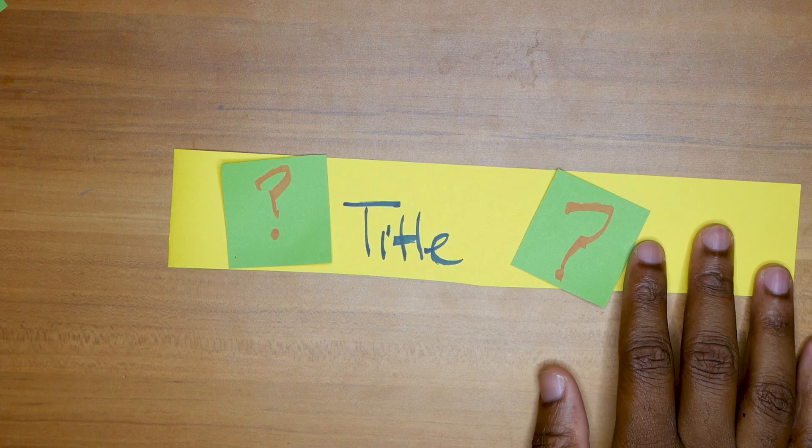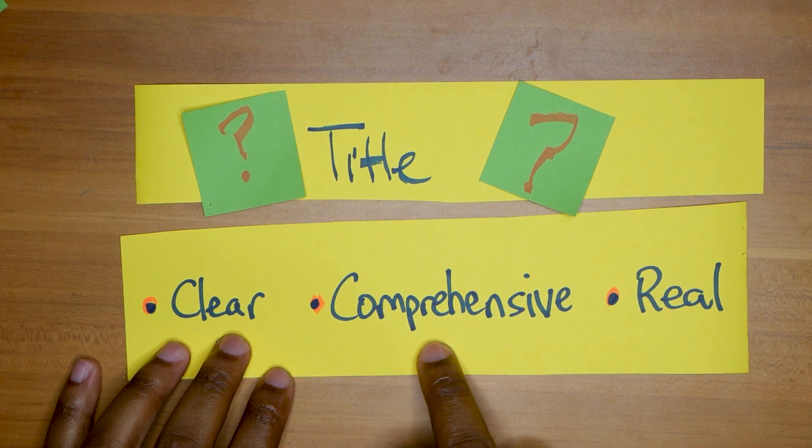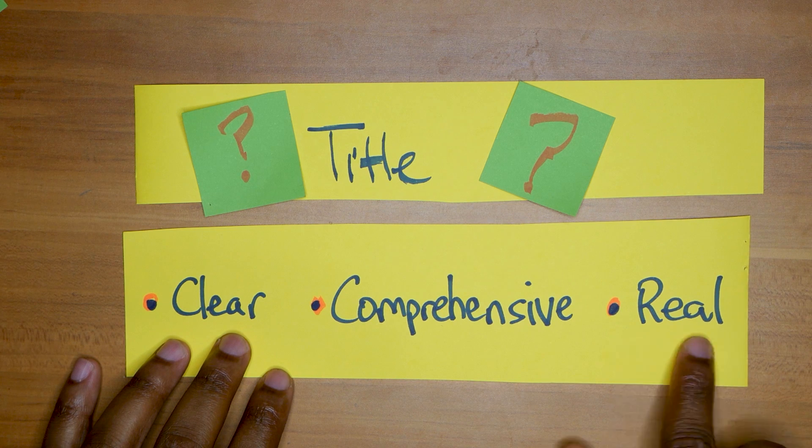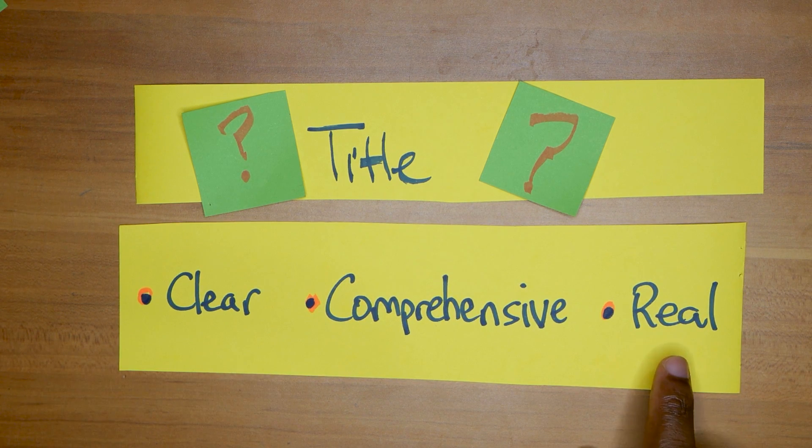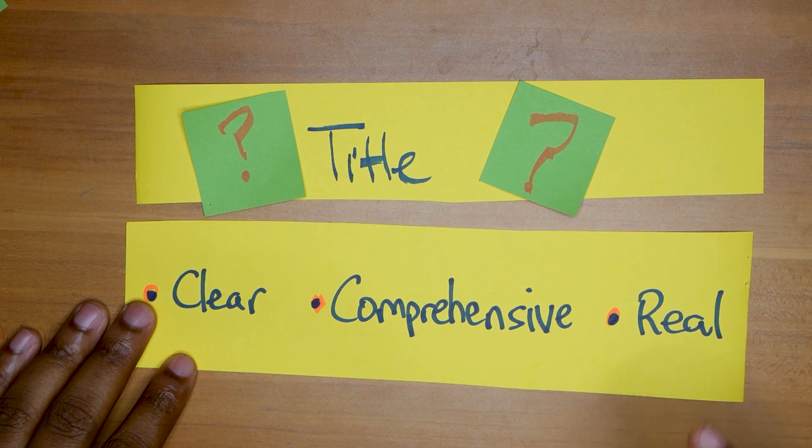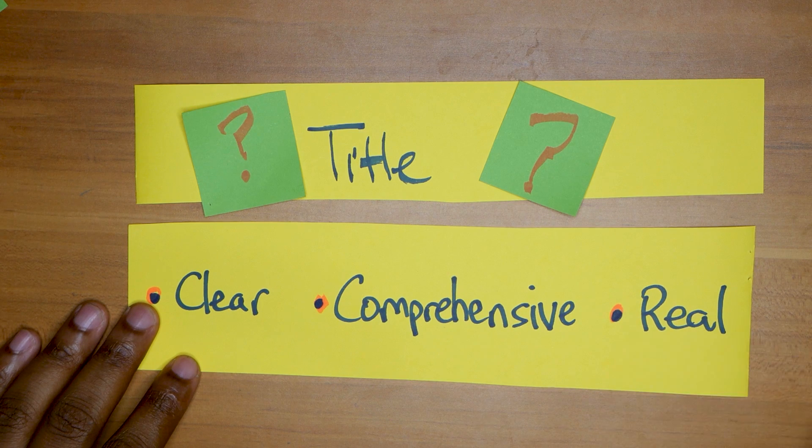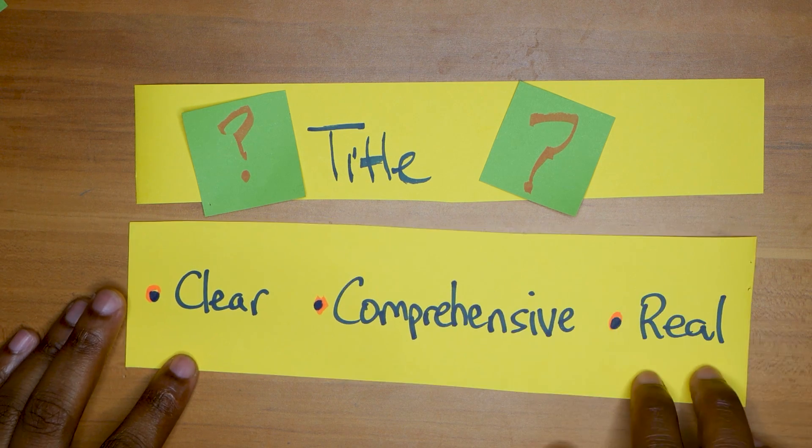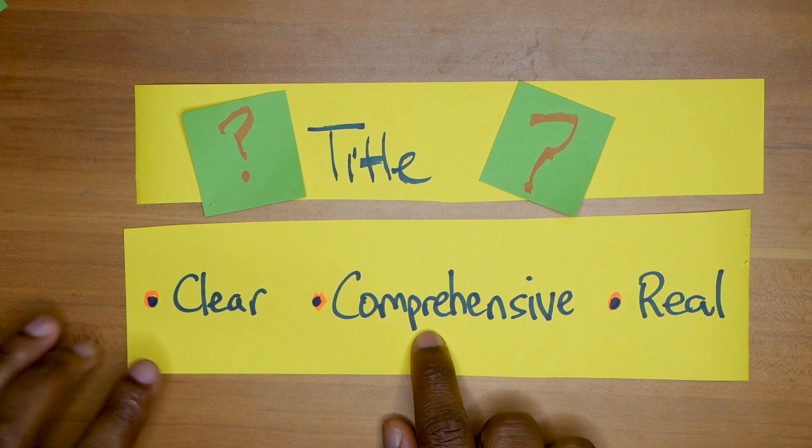Yes, the SBA can be done with groups or single. Let me give you some tips. Your title should be clear, comprehensive, and real. It should actually be a problem that, you know, if you can, don't make up something. There's too many things that are real that you can actually make a project on. You don't need to make up anything.